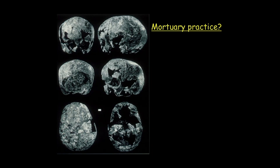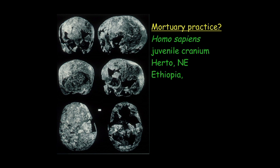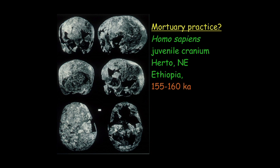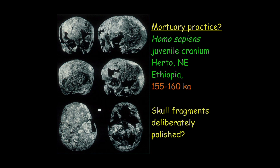There's also a possibility that we're looking at mortuary practices in this time range. Tim White has argued that the polish on this child's skull from Herto in northeast Ethiopia, dated to about 160,000 years ago, resulted from somebody holding onto it and rubbing it when it was already a skull. He argued that this could be part of a kind of mortuary ritual.